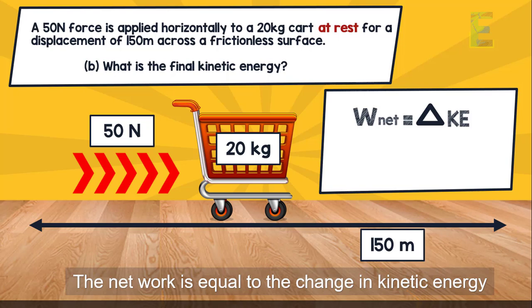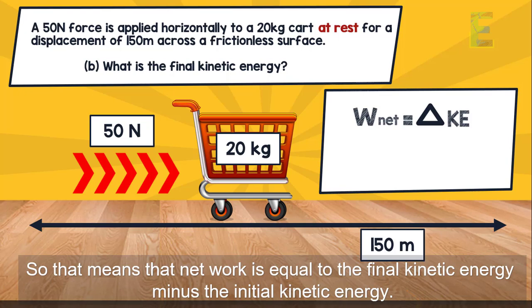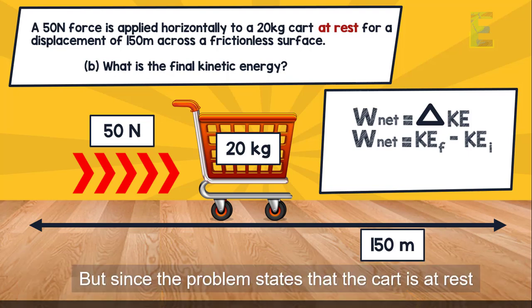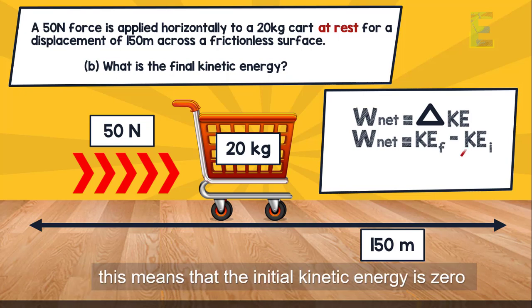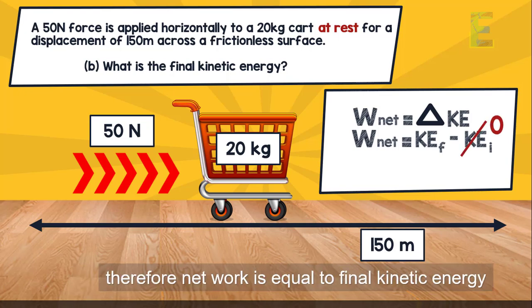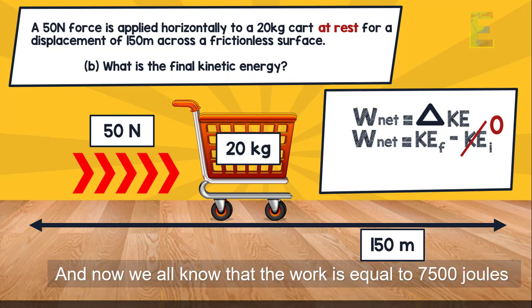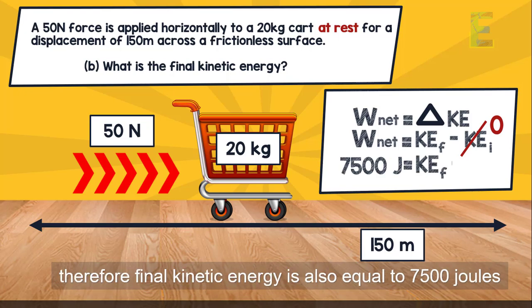Next, let's find the final kinetic energy by applying the work-energy theorem: net work equals the change in kinetic energy, which is final kinetic energy minus initial kinetic energy. Since the cart starts at rest, the initial kinetic energy is zero. Therefore, net work equals final kinetic energy. Since work is 7,500 joules, the final kinetic energy is also 7,500 joules.